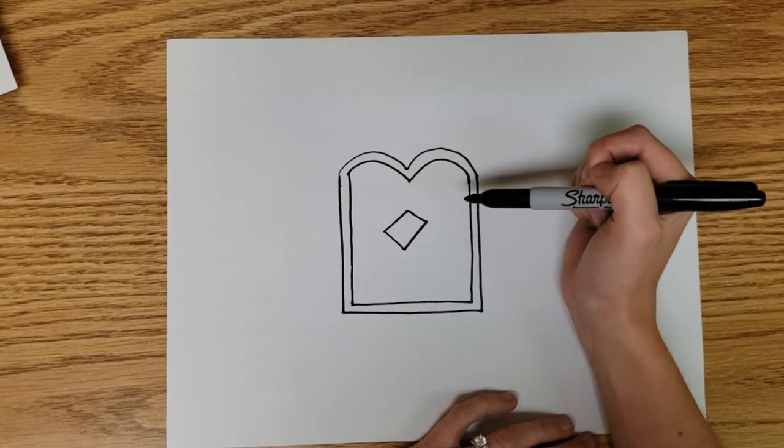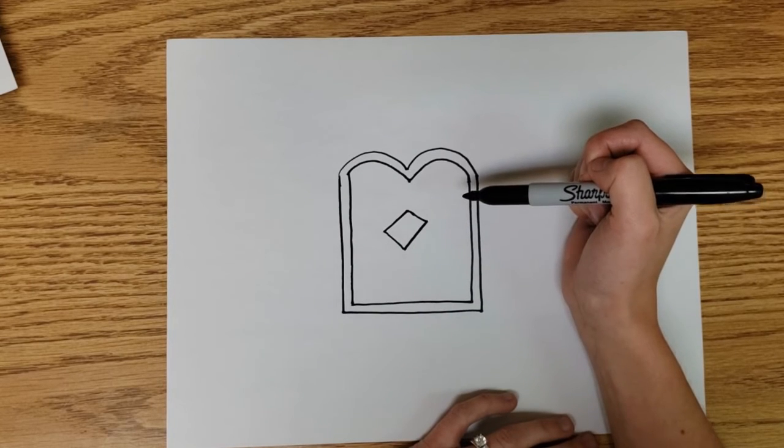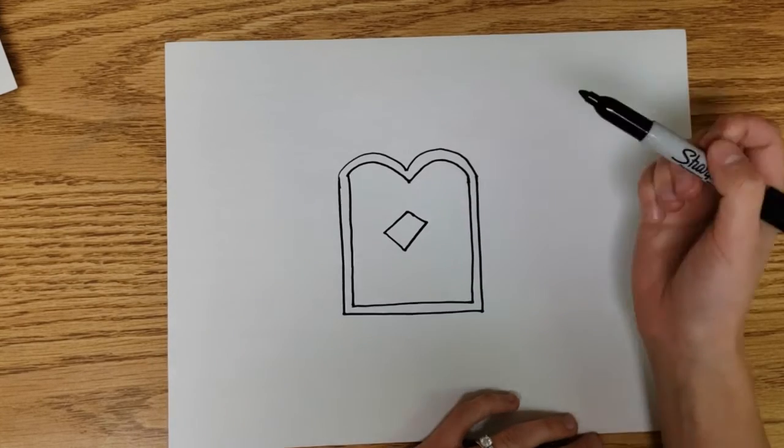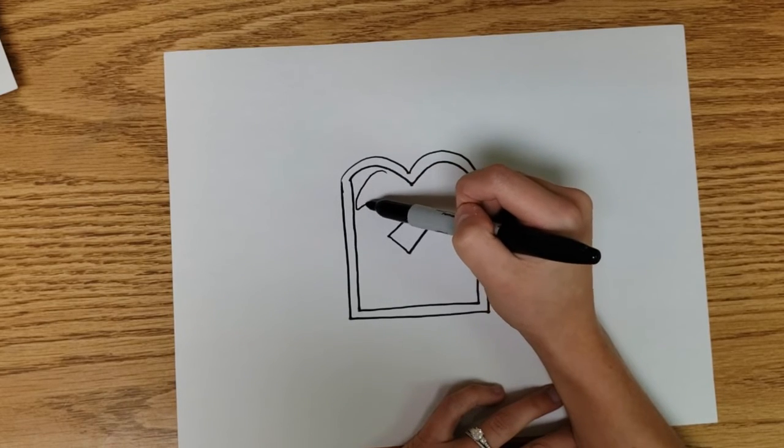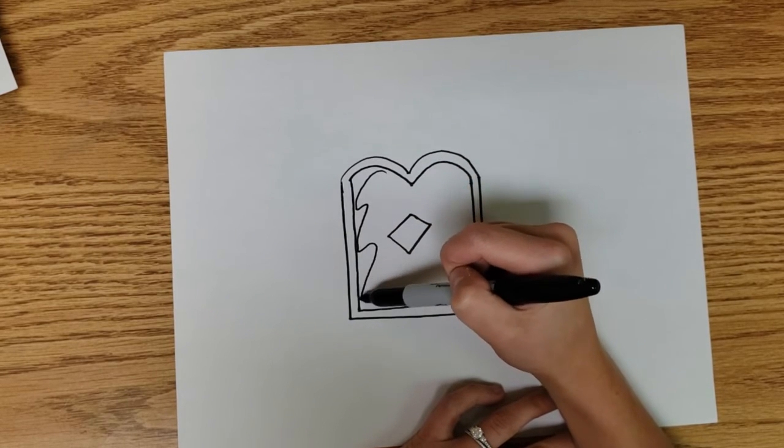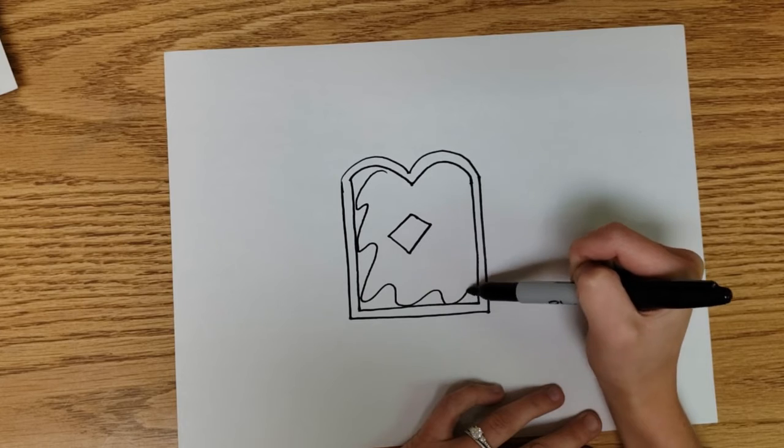We're going to now - it's almost like think of spreading jelly. I'm just taking wavy lines going around again the inside of our toast or our outer bread line.